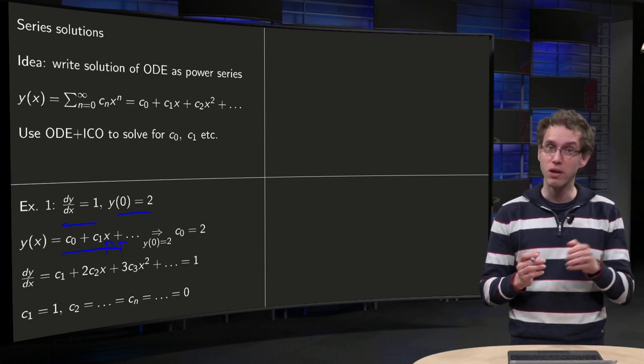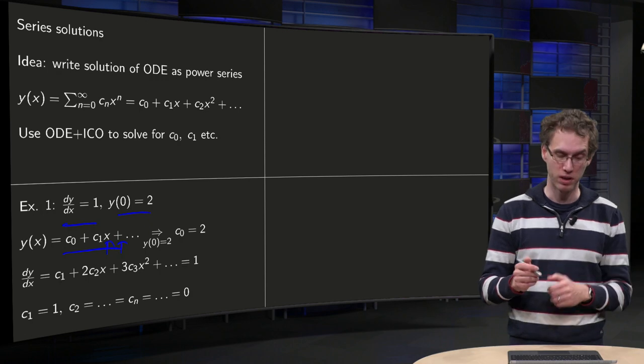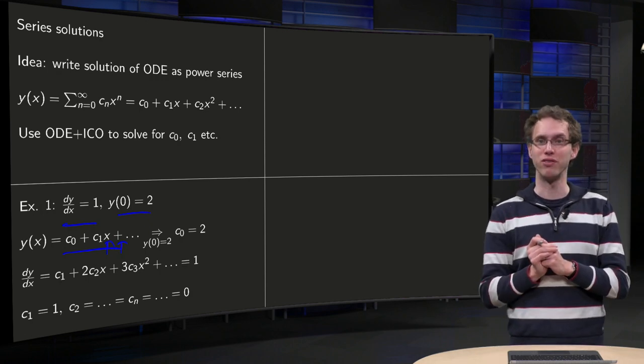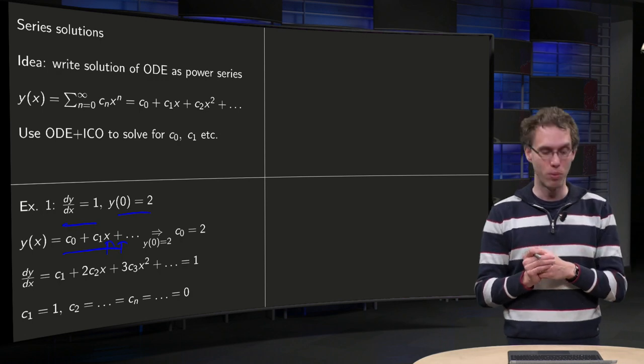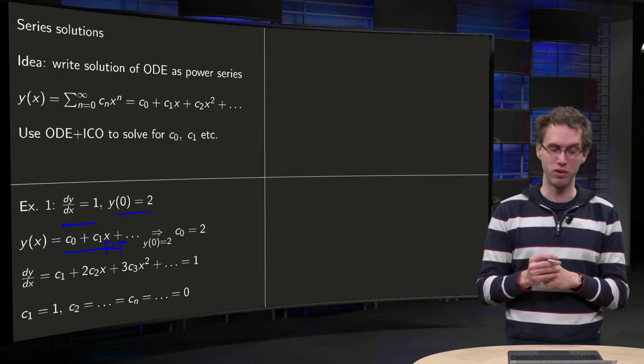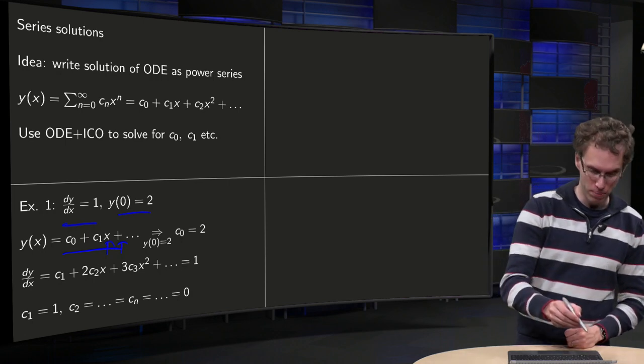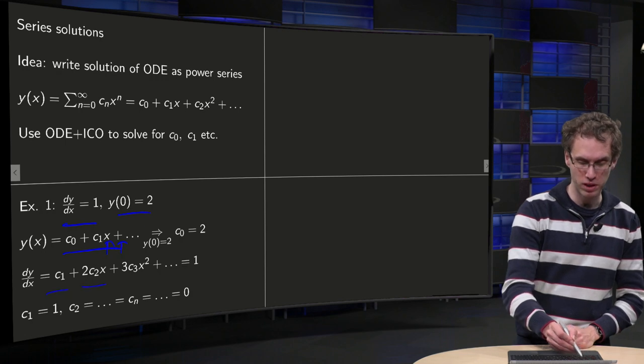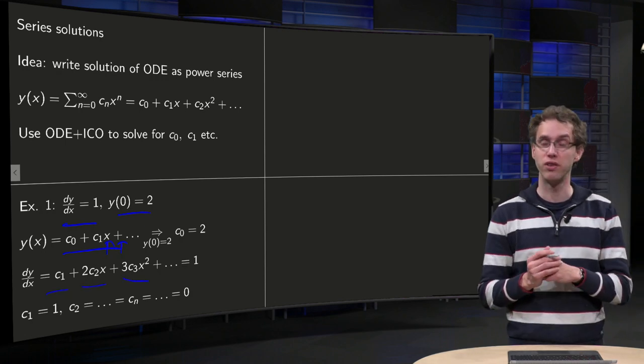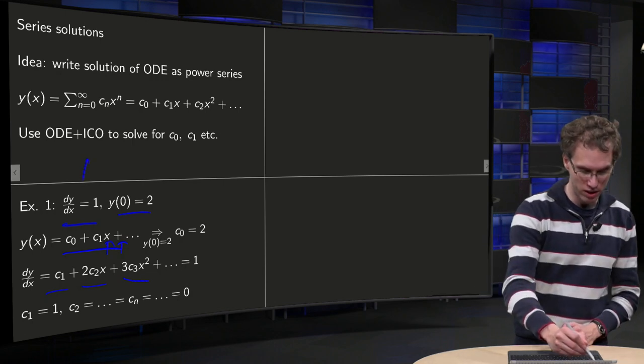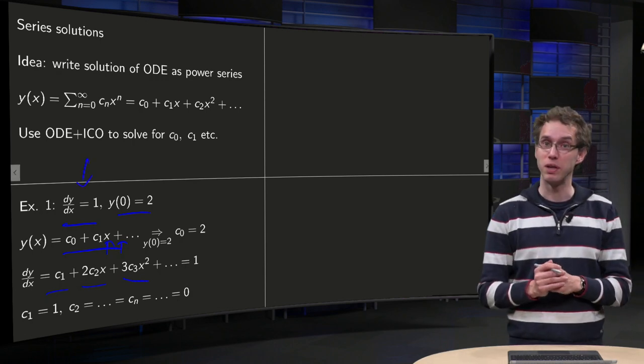which has to be equal to y(0) equals 2. So now we have already our first coefficient, c0 equals 2. What about all the others? Well, for that we use our differential equation. First we compute y', so c0 drops out and we get c1 plus 2c2 times x plus 3c3 times x squared, etc. And our differential equation tells us that dy/dx has to be equal to 1.